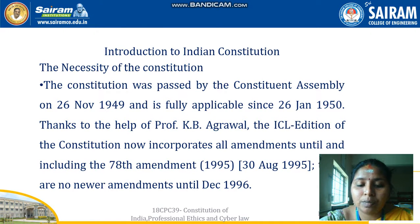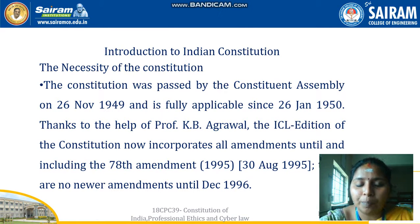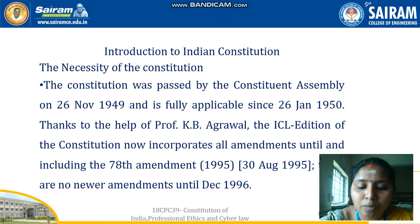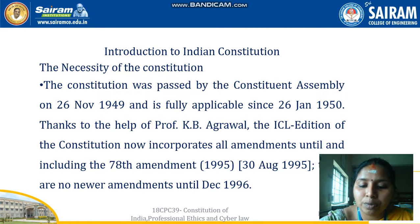Each state is administered by a governor appointed by the president, while each union territory is administered by the president through a minister. The bicameral parliament is composed of the Council of States (Rajya Sabha) and House of the People (Lok Sabha). The Council of States consists of 250 members, out of which the president nominates 12 members having special knowledge or practical experience in literature, art, science, and social service. The remaining 238 seats are filled by persons elected by the legislative assemblies of their respective states in staggered re-elections of one-third every second year.